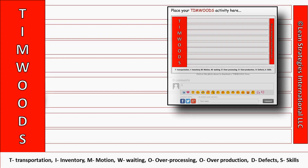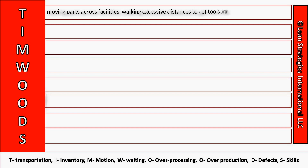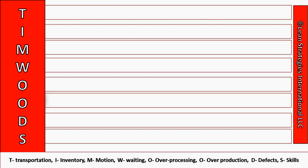Let's do one together quickly. If I were doing transportation, I would set the timer for three minutes, then brainstorm forms of transportation waste like moving parts across facilities, walking excessive distances to get tools, and retrieving data. When my three minutes was up, I would repeat for each form of waste.